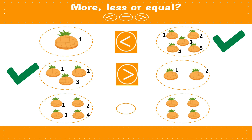Now count: one, two, three, four. And this side you have one, two, three, four — which is greater? Do you think they are greater? No, they are equal! So we have learned less than, greater than, and equal.